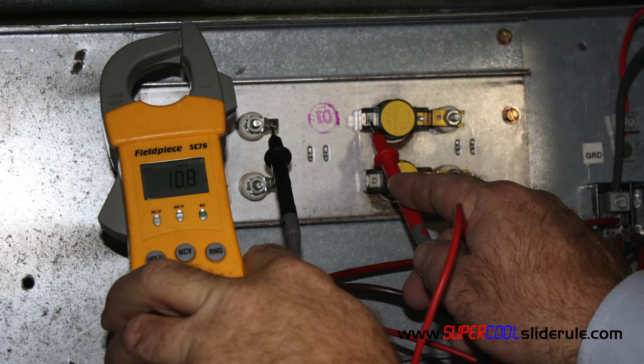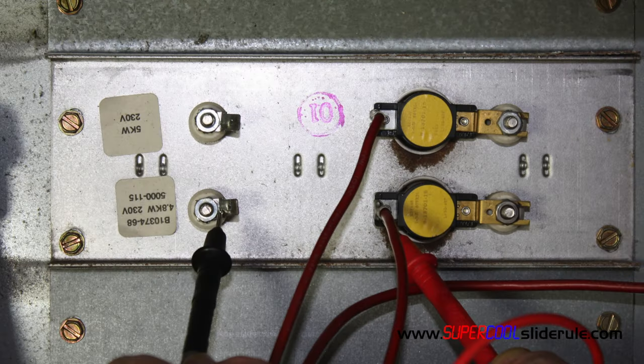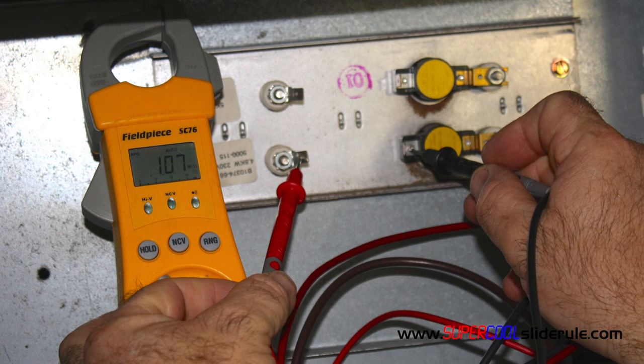In this example, we have a little over 10 ohms on the top. On the second one down, we have 10.7 ohms as well.